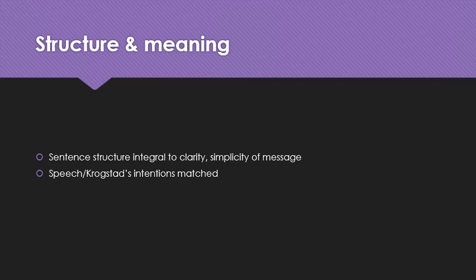He has a straightforward intention and he wants her to know it, so he structures his language straightforwardly. It's about how the ideas that motivate the play permeate every level of the text — even the individual sentences and lines that the characters speak. Krogstad speaks in such a way that not just the ideas but the form of his speech communicates what's going on inside of him.